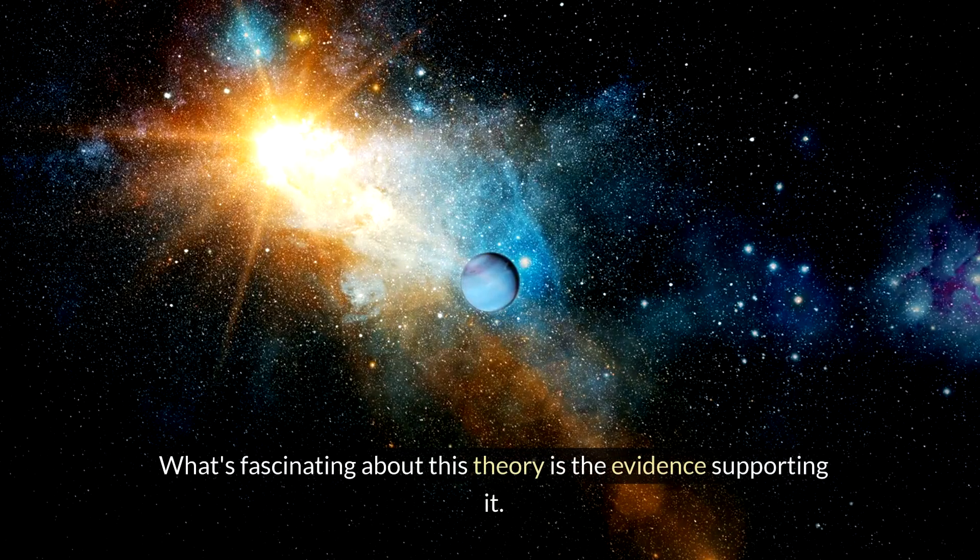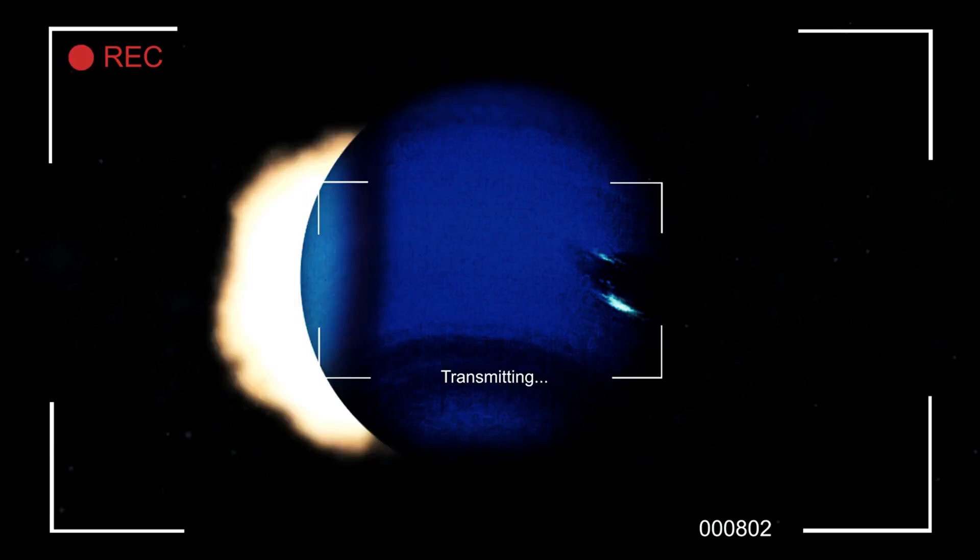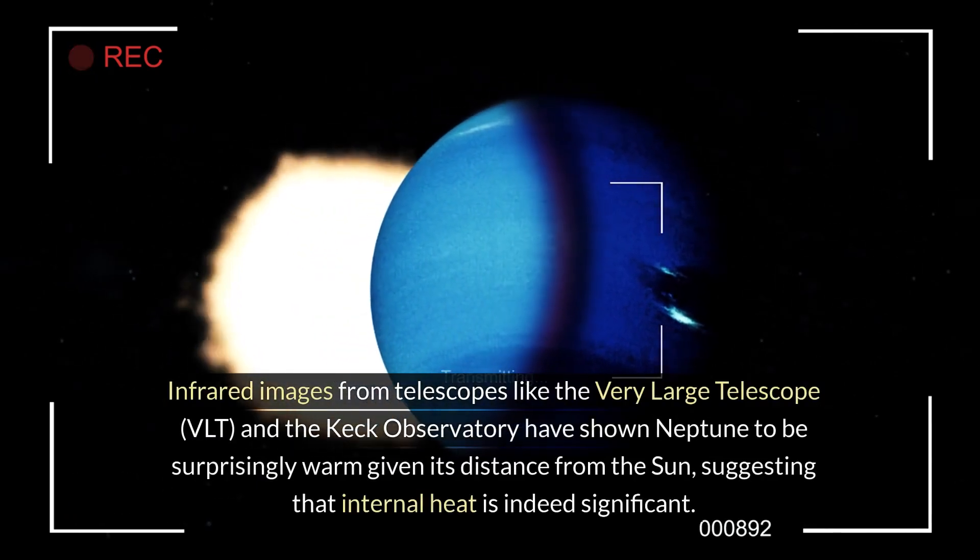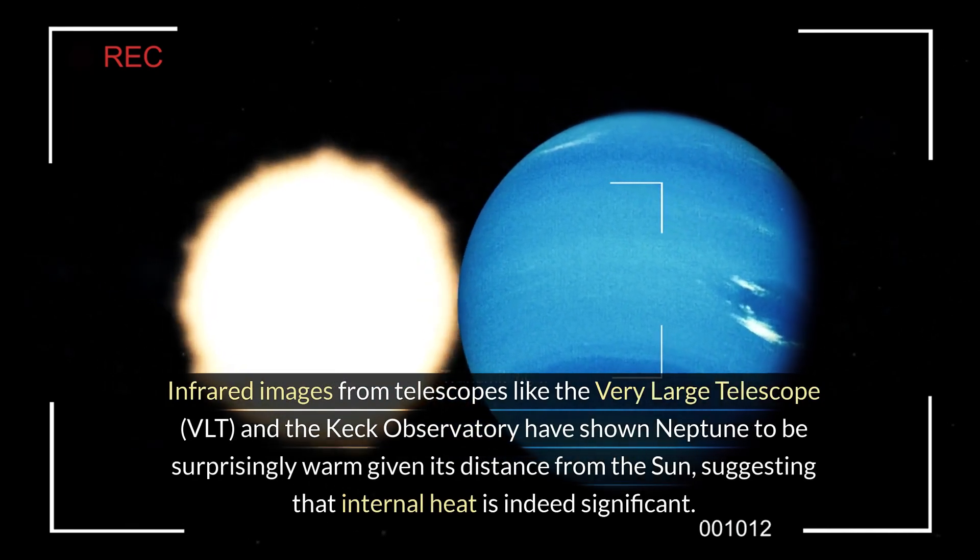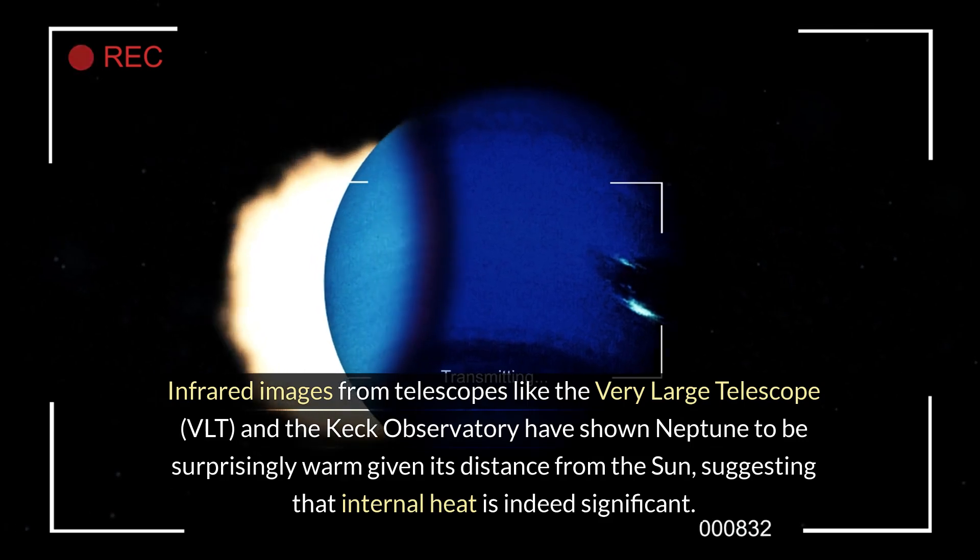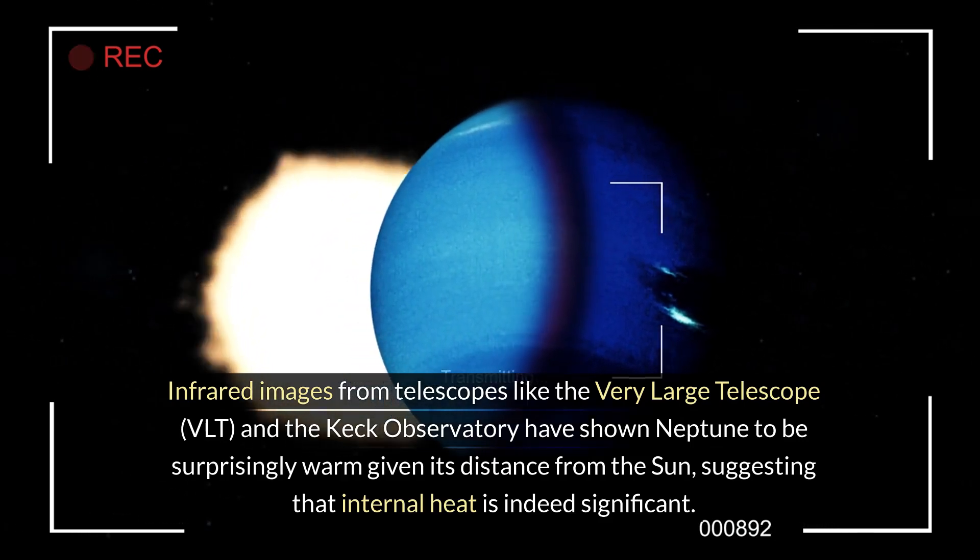What's fascinating about this theory is the evidence supporting it. Infrared images from telescopes like the Very Large Telescope (VLT) and the Keck Observatory have shown Neptune to be surprisingly warm given its distance from the Sun, suggesting that internal heat is indeed significant.